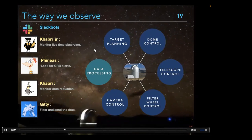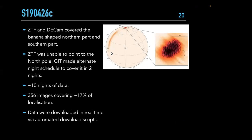To show why GIT matters: in 2019, a GW alert came in on the night of the 26th in India while we were watching the moon. The localization had high probability near the north pole, a banana-shaped region, and some probability in the far southern hemisphere. ZTF covered the banana patch in the north, and DECam at CTIO covered the southern part.